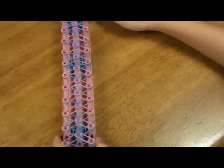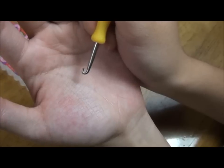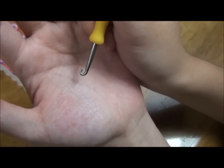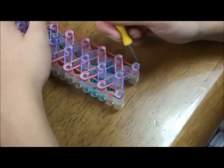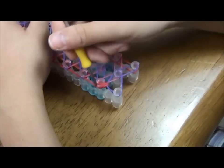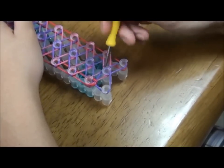Flip the template over so that the arrows are pointing towards you. An easy way to hook the rubber bands is to hold the hook where the pointy side is facing away from you. I'll start from the bottom row and hook the red rubber bands forward. Make sure to push it down so that it's easier.